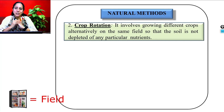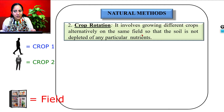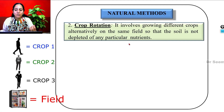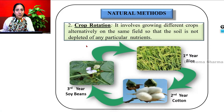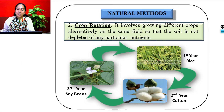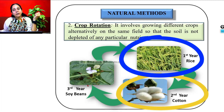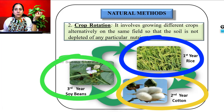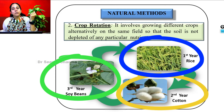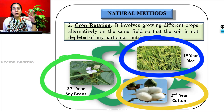Crop rotation involves growing different crops alternately on the same field so that the soil is not depleted of any particular nutrients. The farmer knows the nutritional requirements of each crop and plants them accordingly. For example, if the farmer plants rice in the first year, then cotton in the second year, and soybeans in the third year, such rotation not only fulfills the nutritional requirement of each crop but also enables the soil to replenish its nutrients naturally.